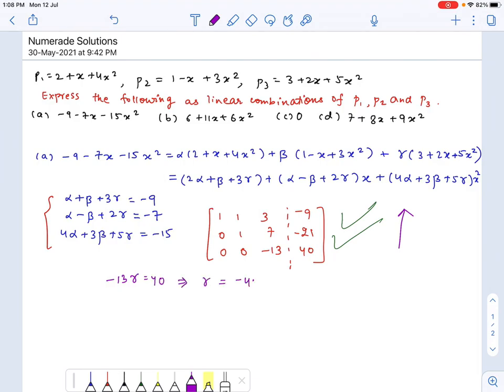And alpha plus beta plus three times gamma equals negative nine. So that would give us alpha equals negative nine minus beta minus three times gamma. Just put the value of beta and gamma in this, so we get the coefficients of our linear combination.